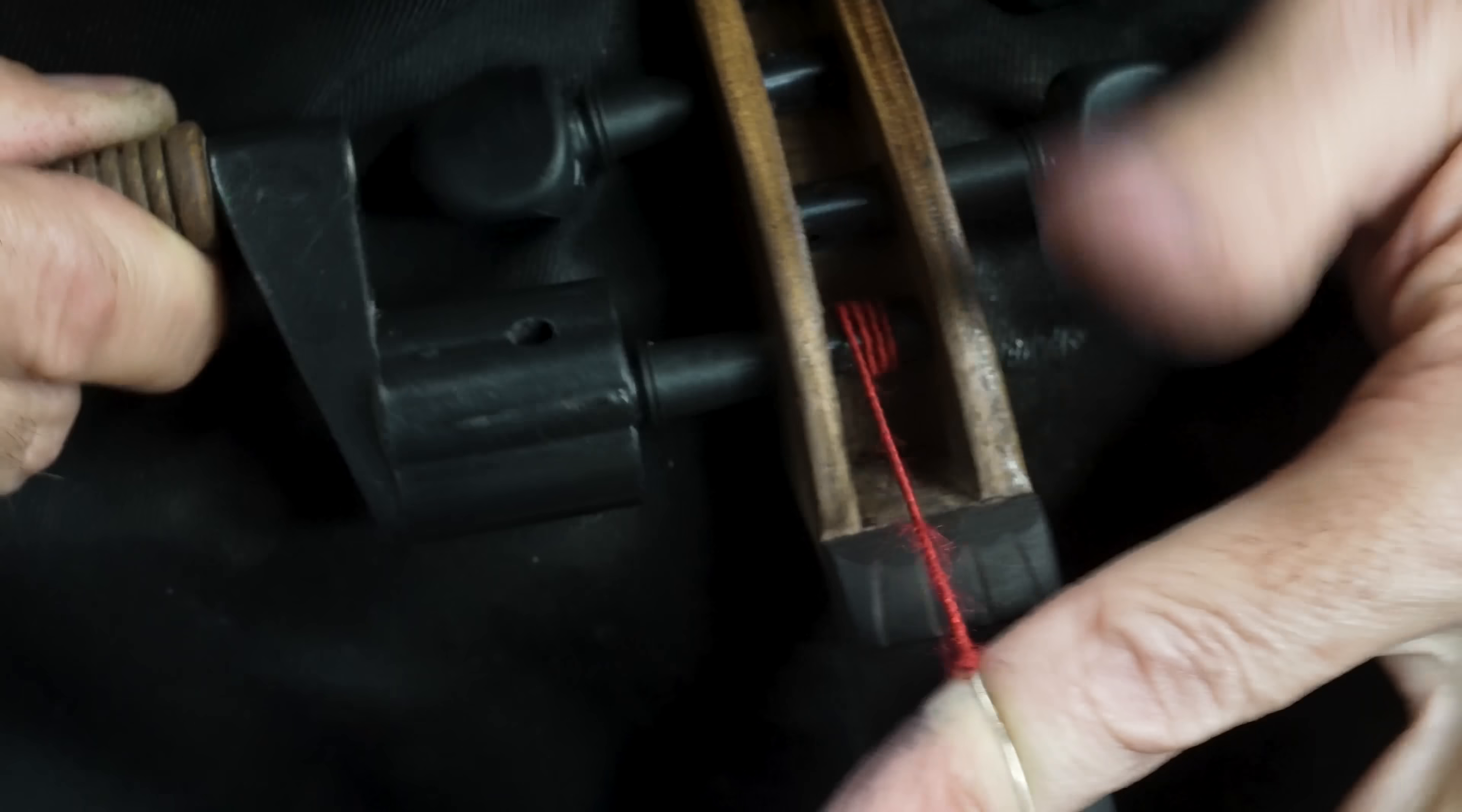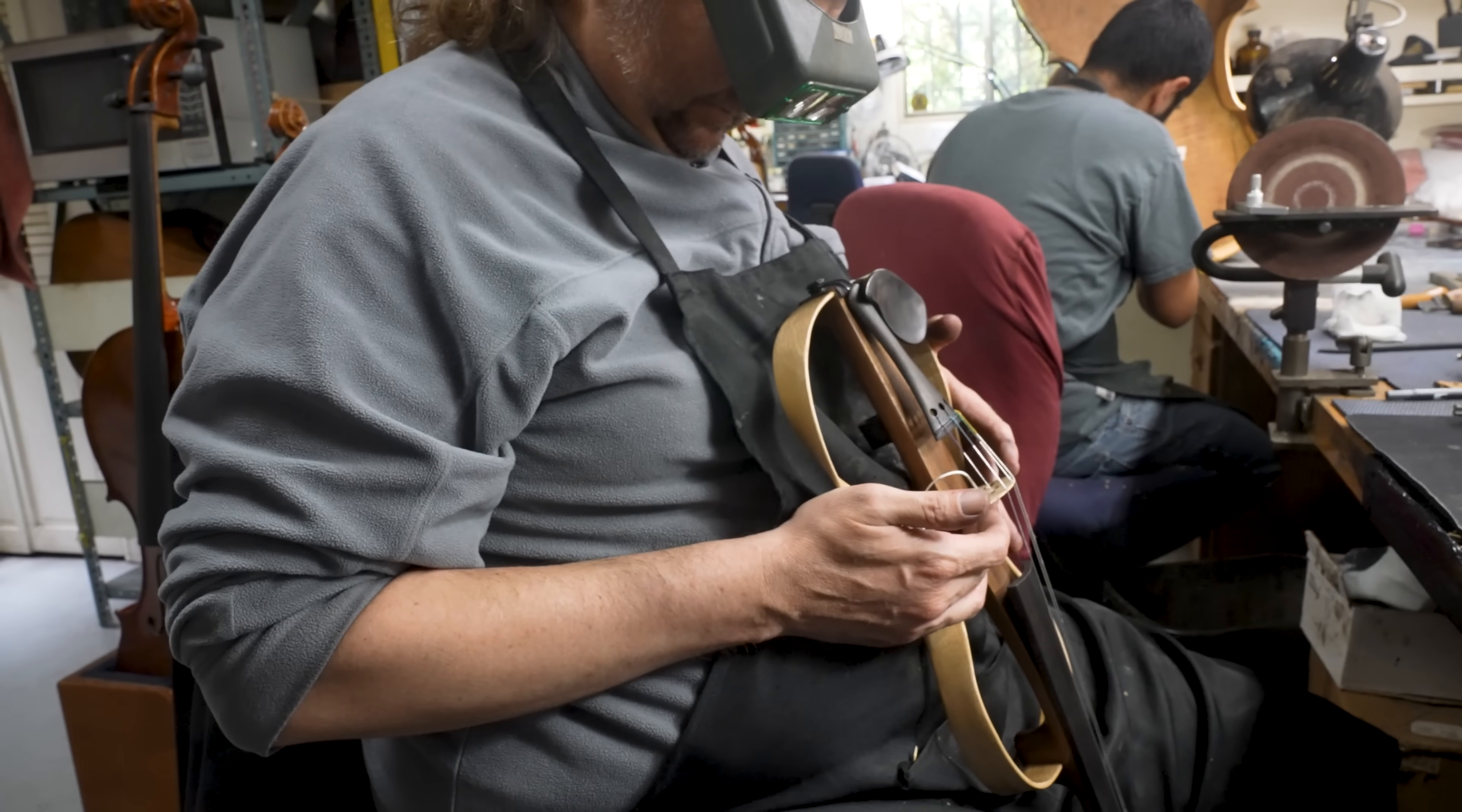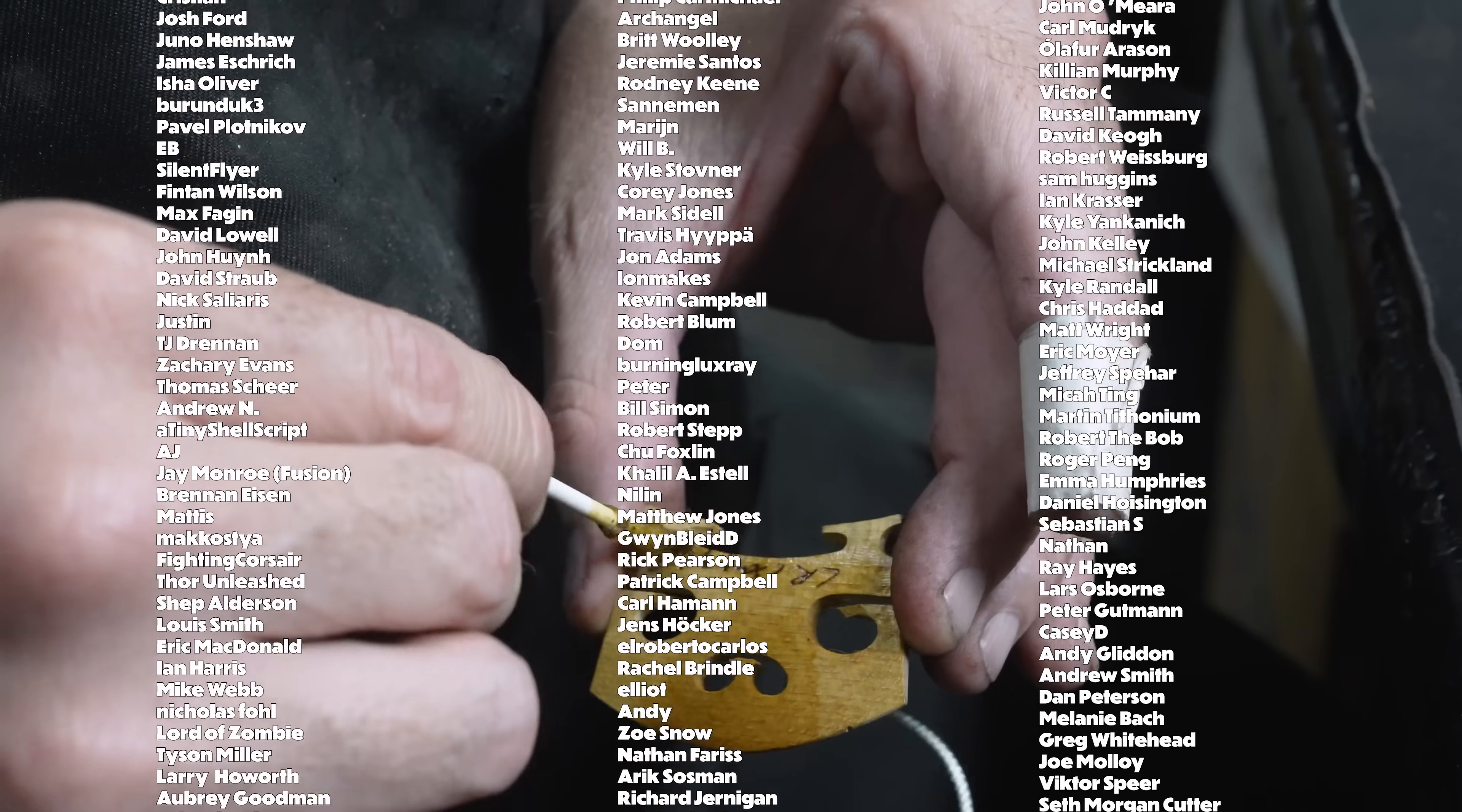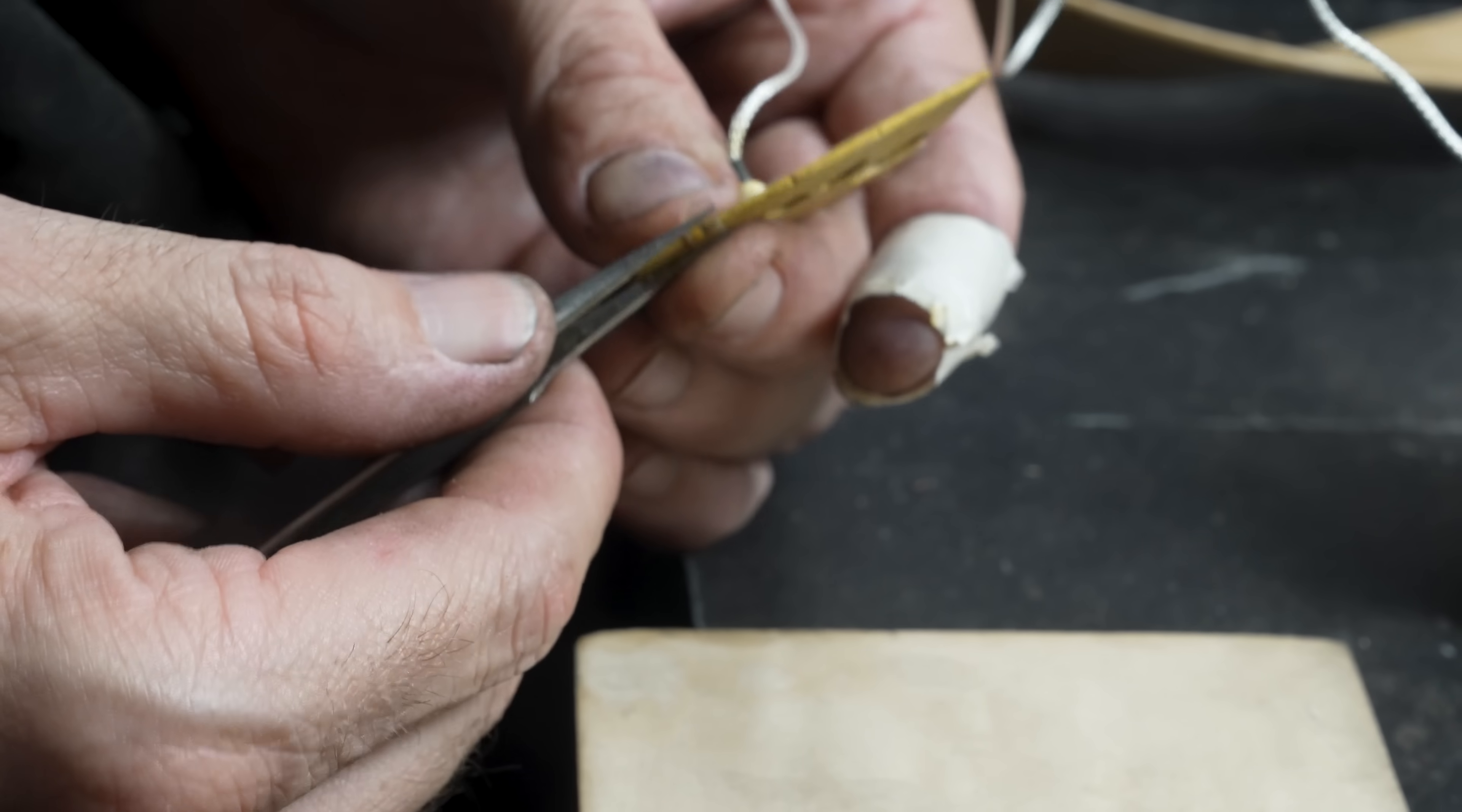For the first string up, we used old throwaway strings that Josh uses on every single violin that he works on. And these are basically used as a gauge so that we can check everything and file the grooves into the bridge without risking accidentally filing your real strings.